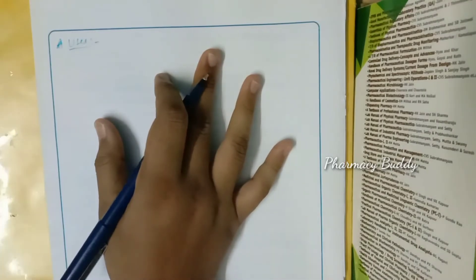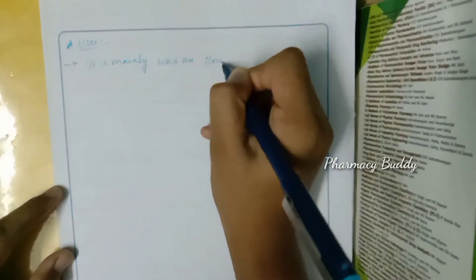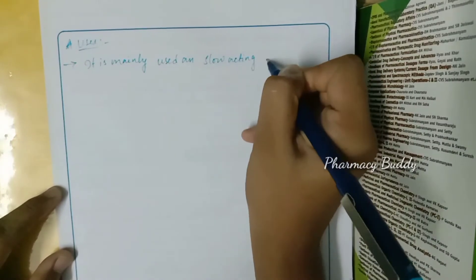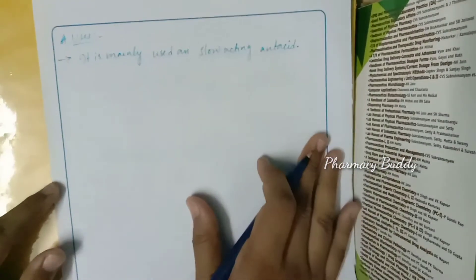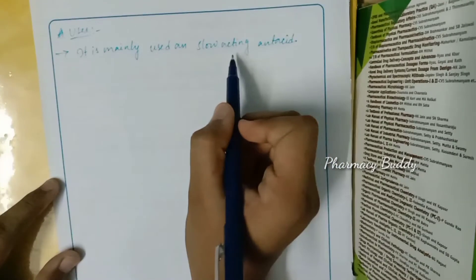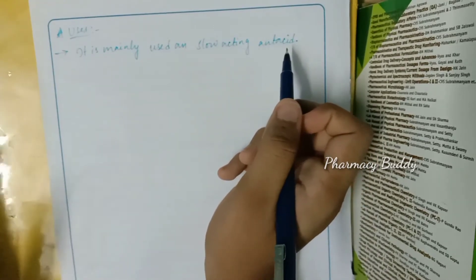Now let us see the uses of aluminium hydroxide. The first and main use is that it is mainly used as a slow-acting antacid. As an antacid, it reduces acid production in the stomach.